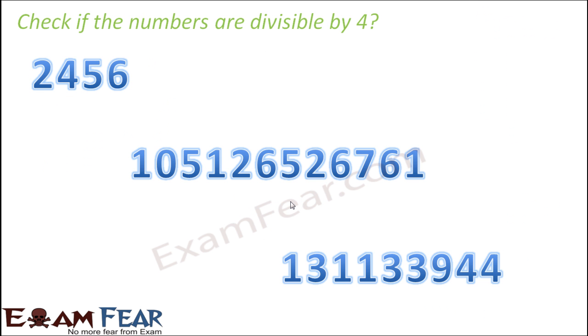So let us quickly look at these numbers and see if these are divisible by 4. So the first number is 2456. We will focus only on the last two digits, that is 56. Now by quick division, we will see if 56 is divisible by 4. So 4×14 is 56. So 56 is divisible by 4. Therefore, this entire number is divisible by 4.